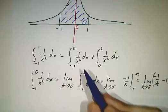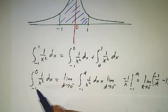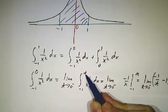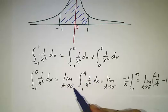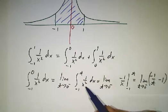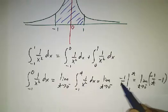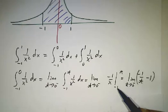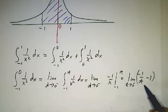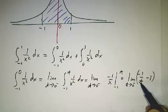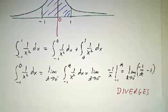So let's see what happens in this case. We'll do the first one first. We'll go, instead of going from negative 1 to 0, we go from negative 1 to t and take a limit as t approaches 0. Well, now we can apply the fundamental theorem of calculus, negative 1 over x. We plug it in and we get this. We say, what happens as t approaches 0? Well, if t is a tiny negative number, then minus 1 over t is going to be a gigantic positive number. This limit is infinity. It diverges.